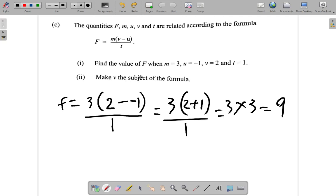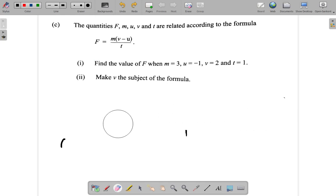Now, make V the subject of the formula. So F, let me erase the working here. I'm going to need more space. F equals M times V minus U, over T.